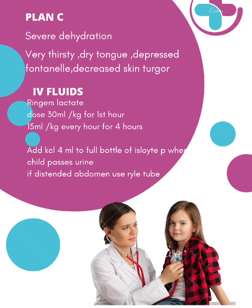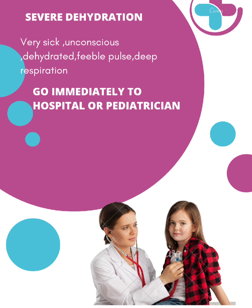After stopping RL, we switch to Isolyte P. Normally 200–400ml of RL is required. Once urine is passed, we add 4ml of potassium chloride (KCl) to the full bottle of Isolyte P — do not inject KCl directly. Watch for abdominal distension. If the child is severely dehydrated, unconscious, with stopped urine, deep respirations, or high fever and pulse, do not waste time — refer immediately to hospital or a pediatrician.